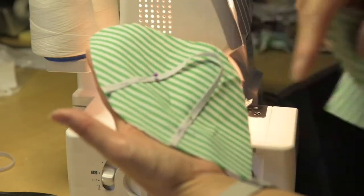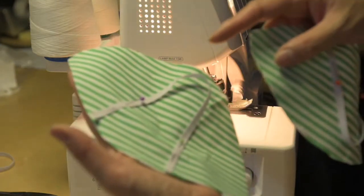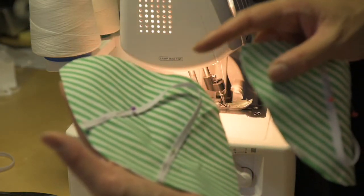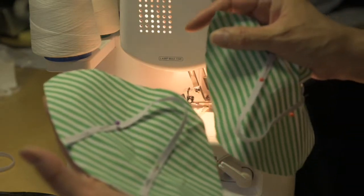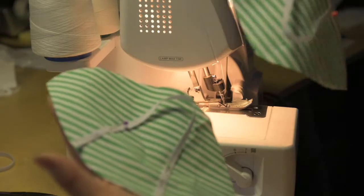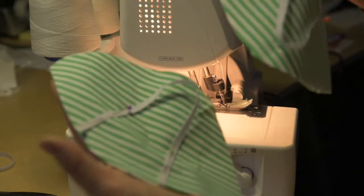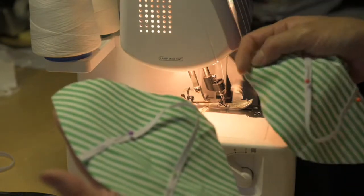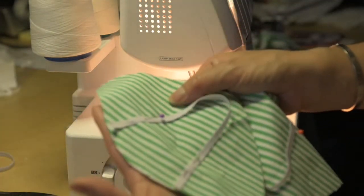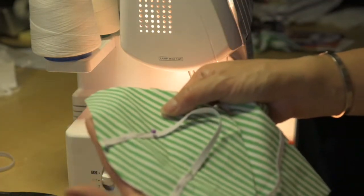You also need to adjust your seam allowances to take into account the width of the serging, so you can cut off the extra fabric when you cut your pieces or you can serge it off when you take it to the machine. Just be aware that you need to adjust your seam allowances.